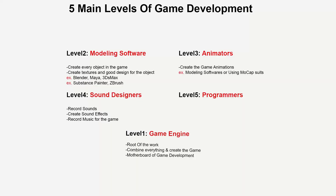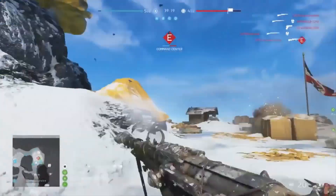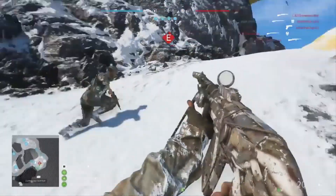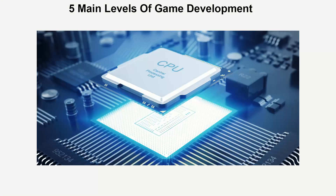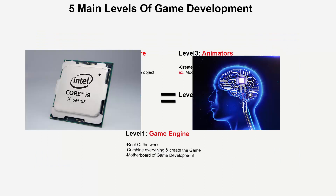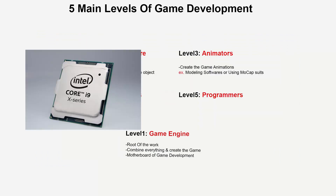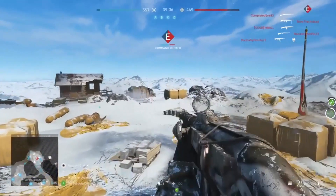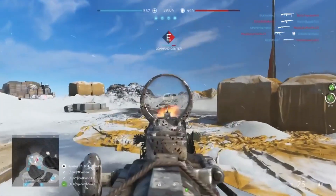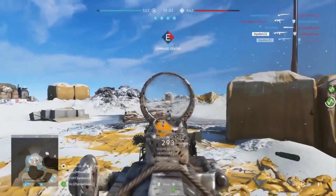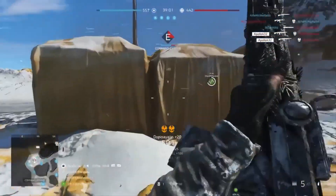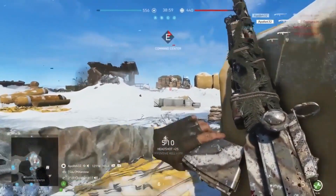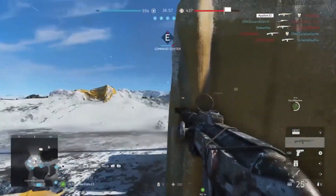Level 5: Programmers. You remember we talked about the game engine as if it was the motherboard of the computer? Well, motherboards cannot work without the processor. The processor is the brain of the computer and it tells the motherboard what to do. So programmers do the same job. The programmers write code that tells the game engine what to do and how the characters should interact with the world around them.